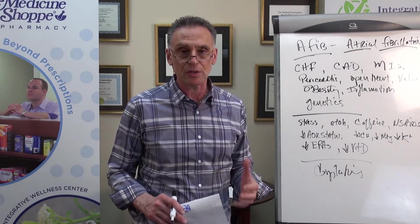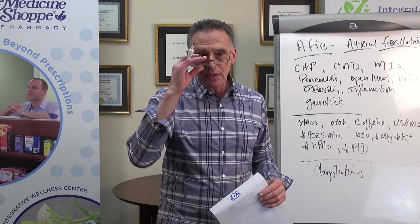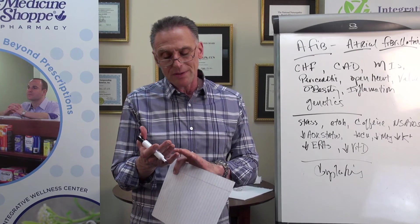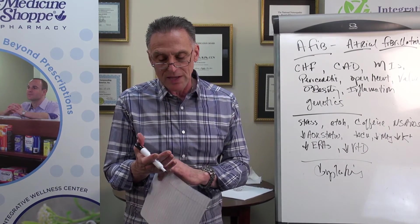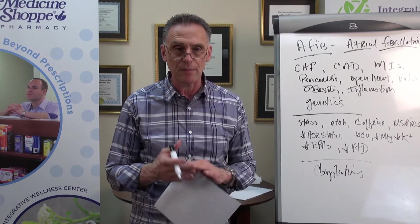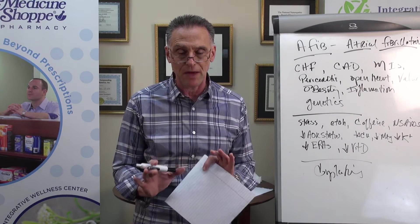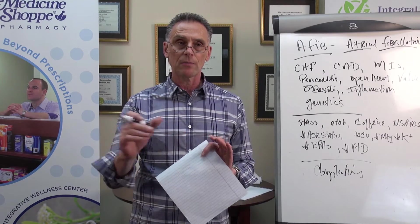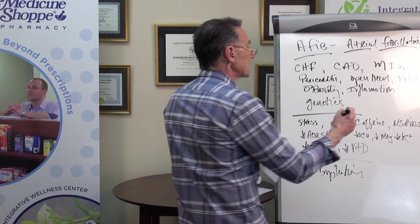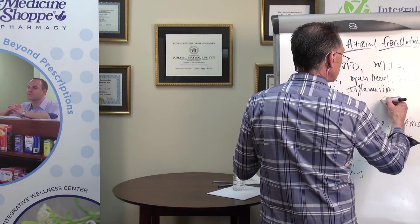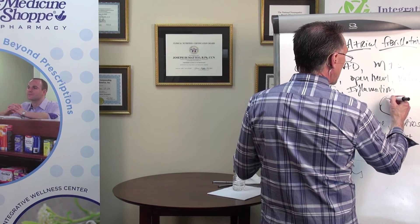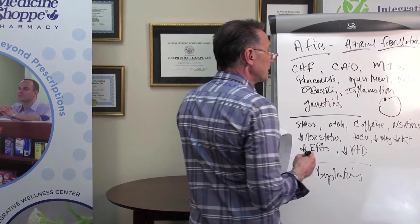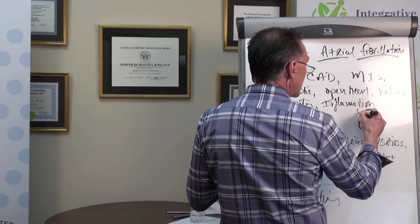So what is atrial fibrillation? Atrial fibrillation is basically, you can have rapid heartbeat. That's not atrial fib. You could have supraventricular SVTs. That's technically not AFib. But let's just focus on AFib. AFib is where there's a portion of your heart.